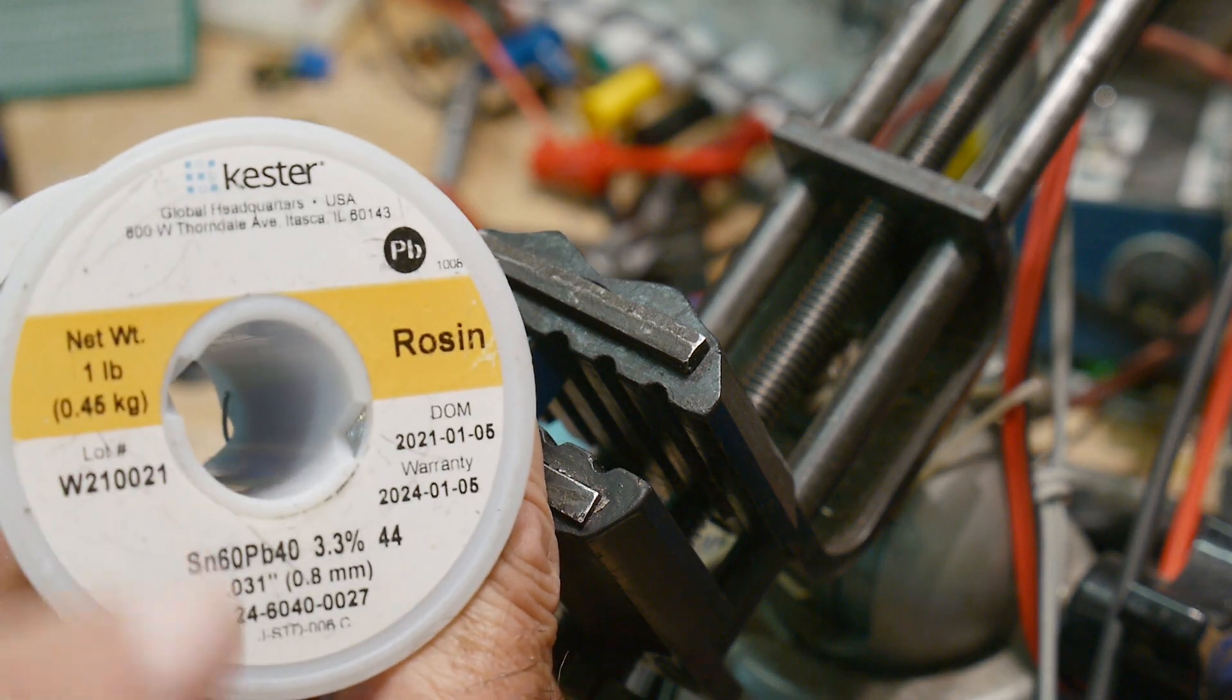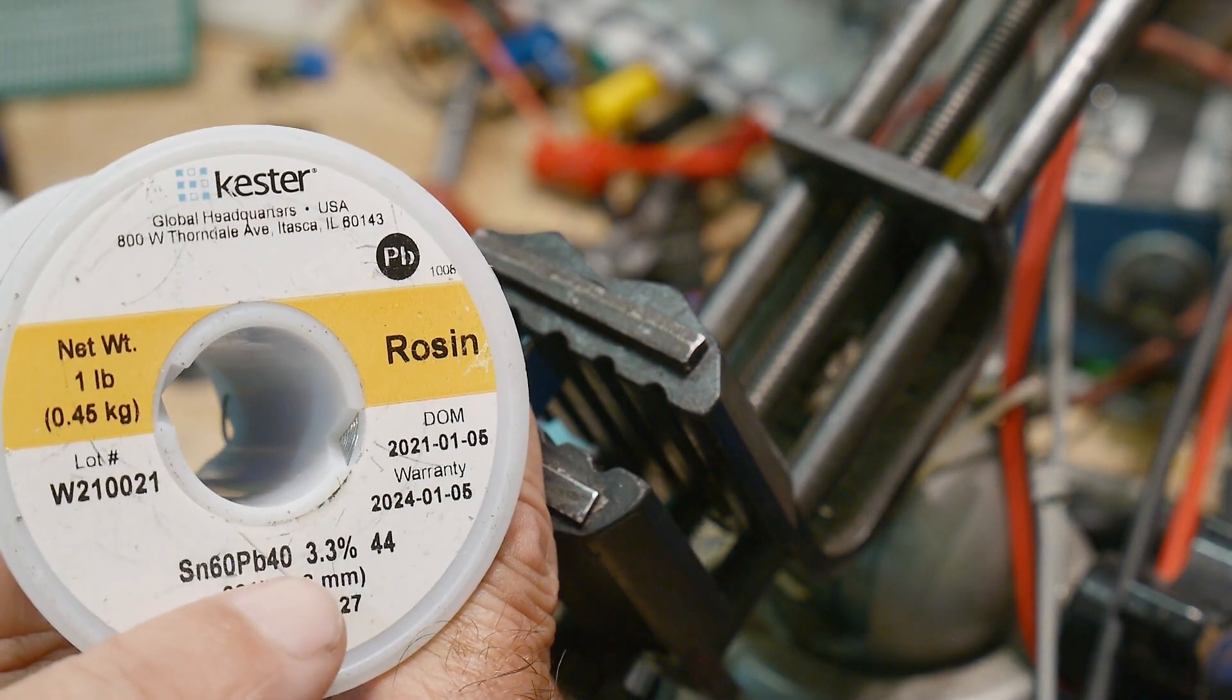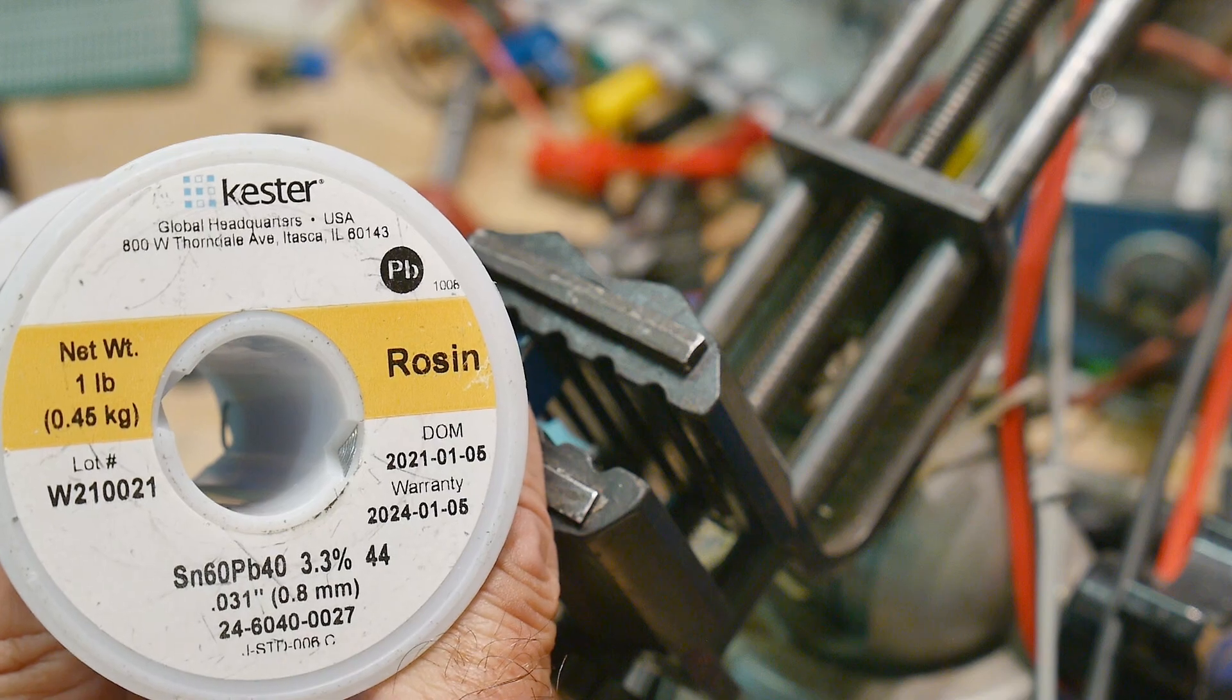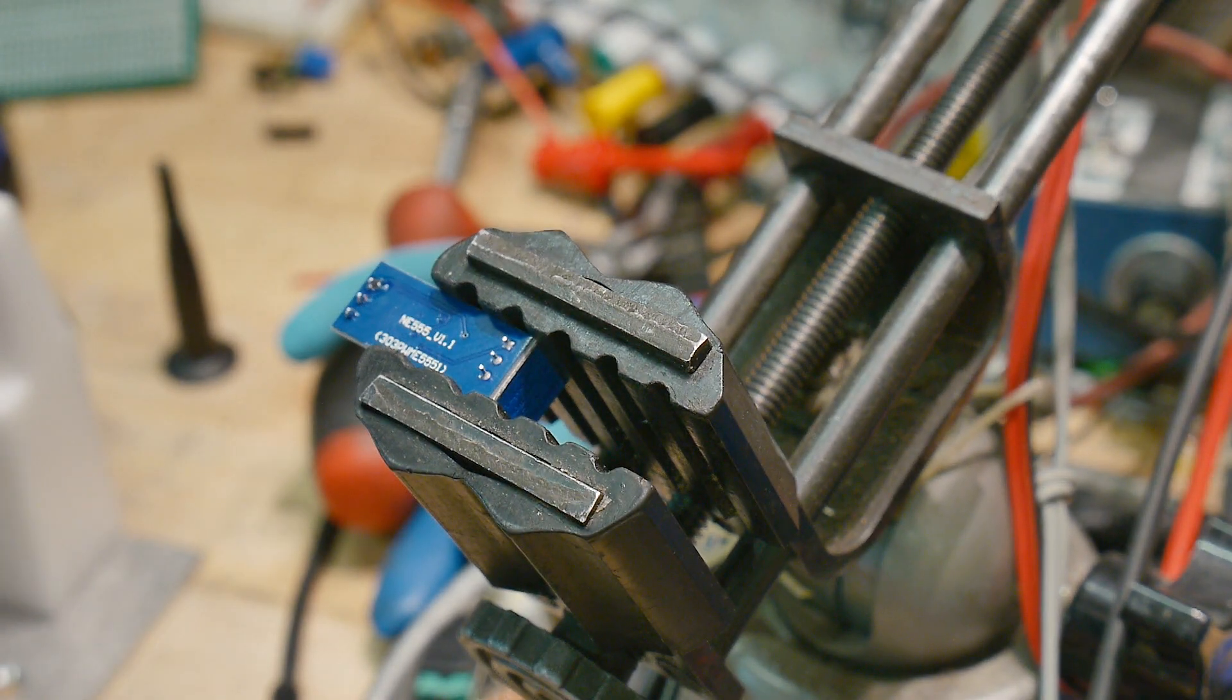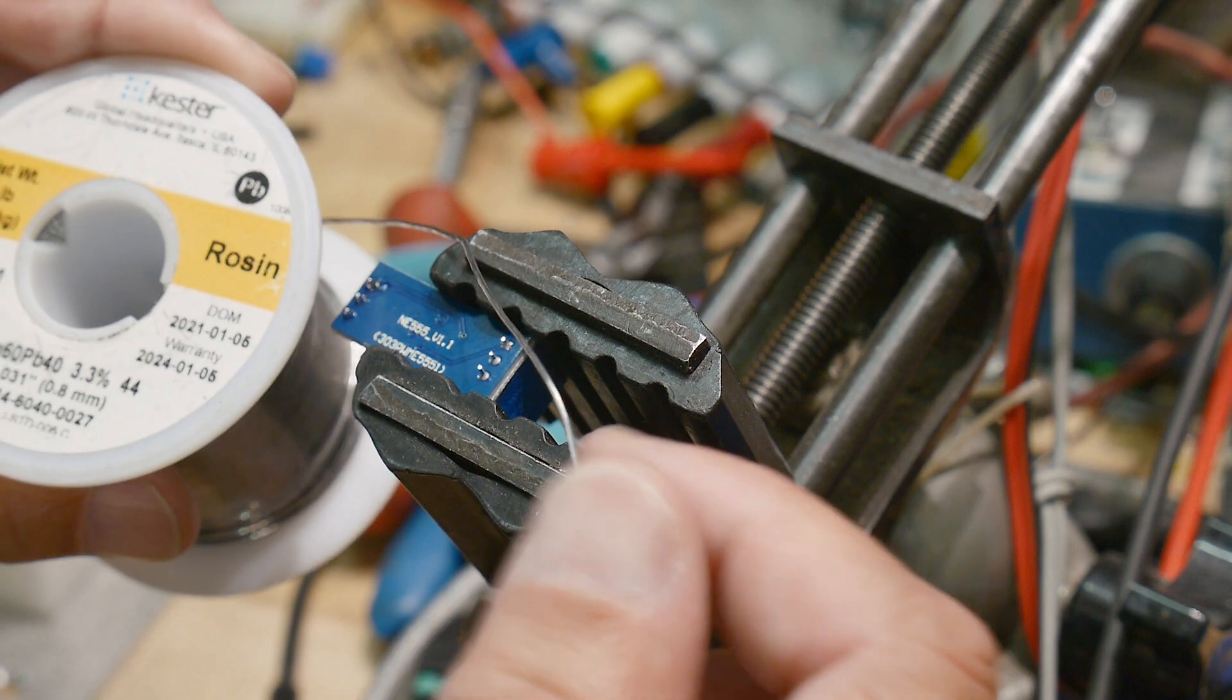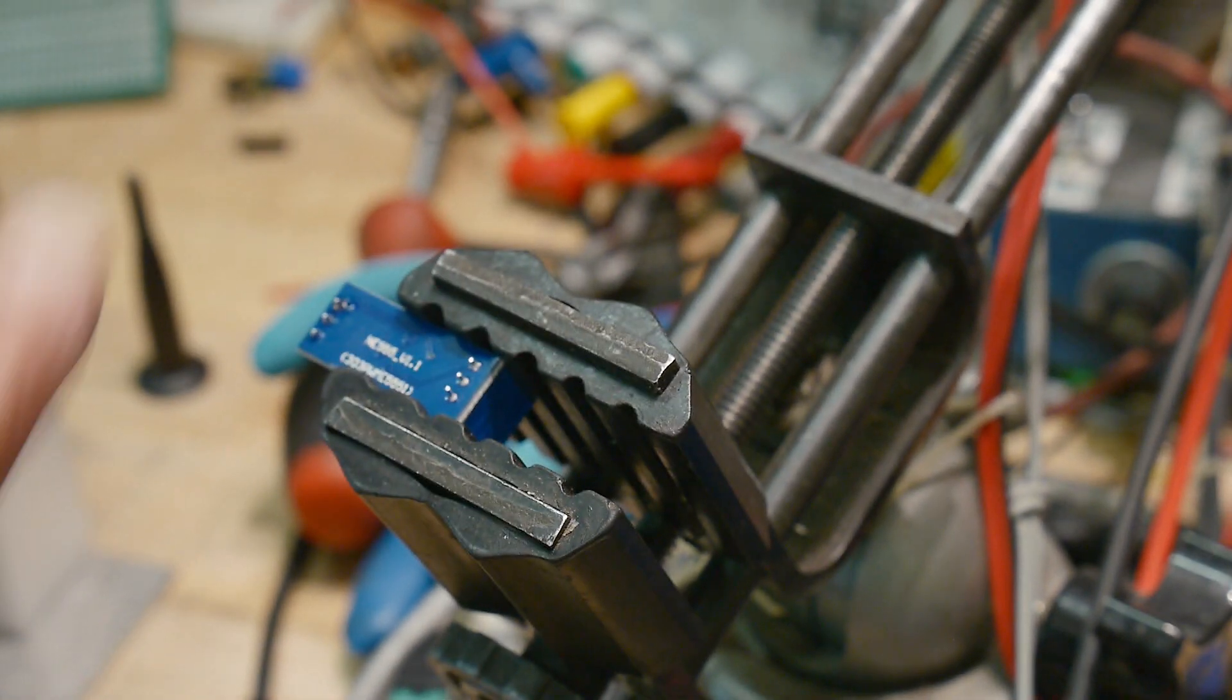If you can see that this is Kester, it's a 60-40, number 44, Kester 44. So that's what I've got. All right. And it's, this is the thickness that I like. It's 0.31, 0.8 millimeters. Okay.